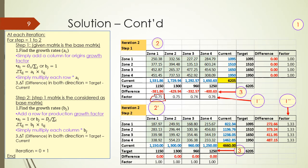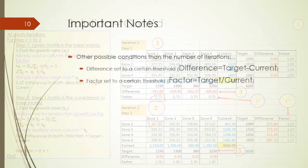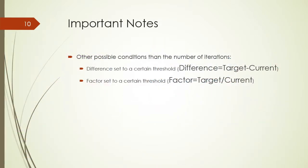In iteration two, step two, we get the factor from the origin. For example, 187.97 is the result of 0.75 multiplied by 250.38, giving 187. We do the same for the next matrix cells. To summarize: the difference is the target minus the current, and the growth factor is the target divided by the current.